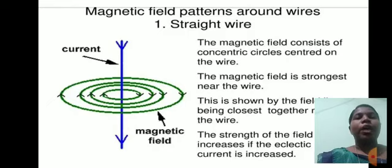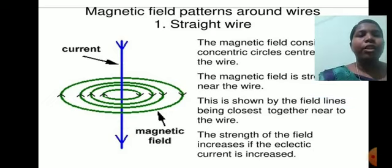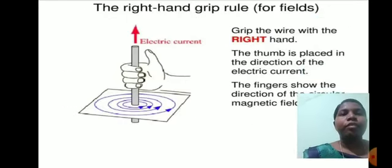Magnetic field patterns around wires: First, straight wire. The magnetic field consists of concentric circles centered on the wire. The magnetic field is strongest near the wire. This is shown in the field lines being closest near the wire. The strength of the field increases if the electric current is increased.